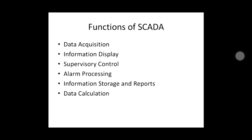Functions of SCADA include: data acquisition, data collection, information display, and supervisory control. There is also alarm processing — if any fault occurs in the system, an alarm is triggered to alert the operator so the fault can be rectified. Information storage and reports use a database to store data and generate corresponding reports using the processor.